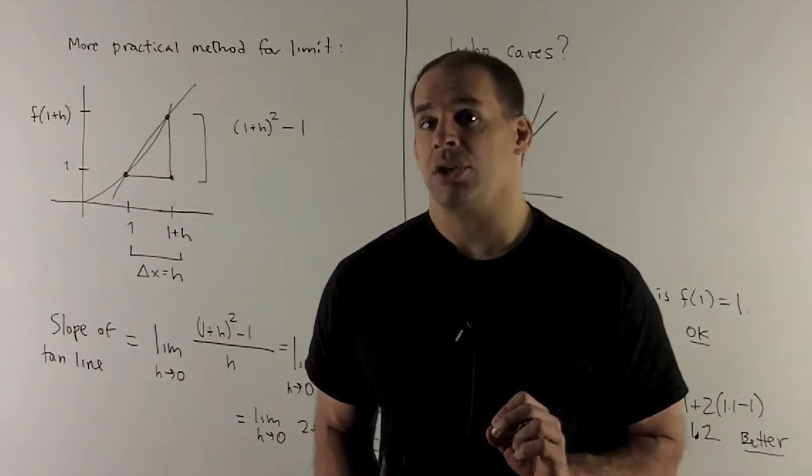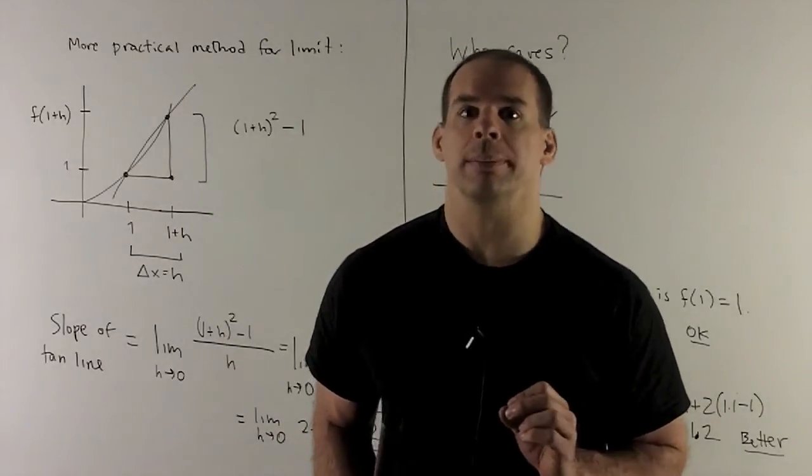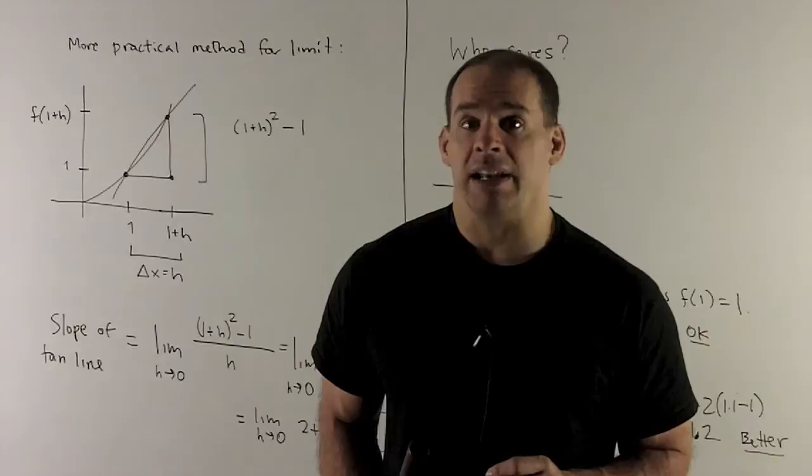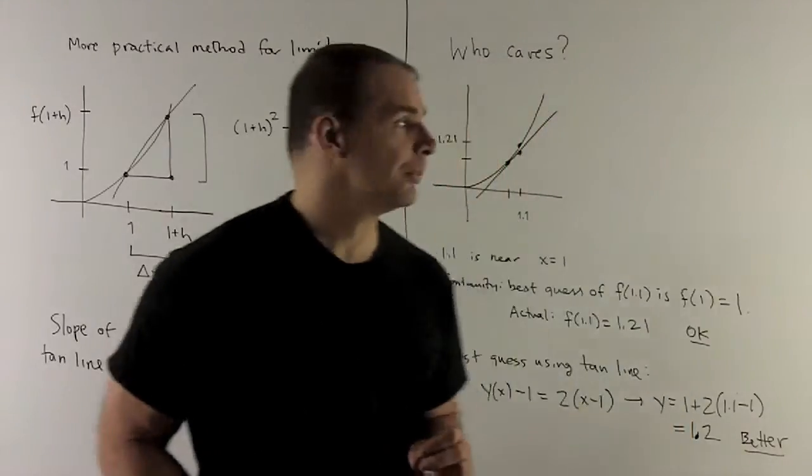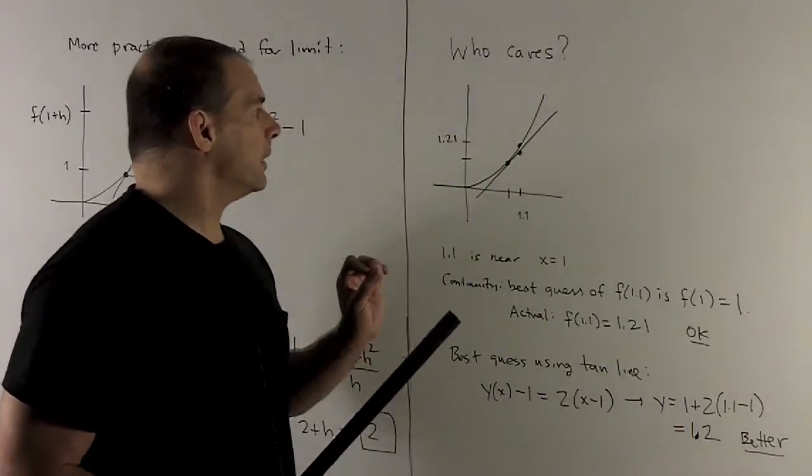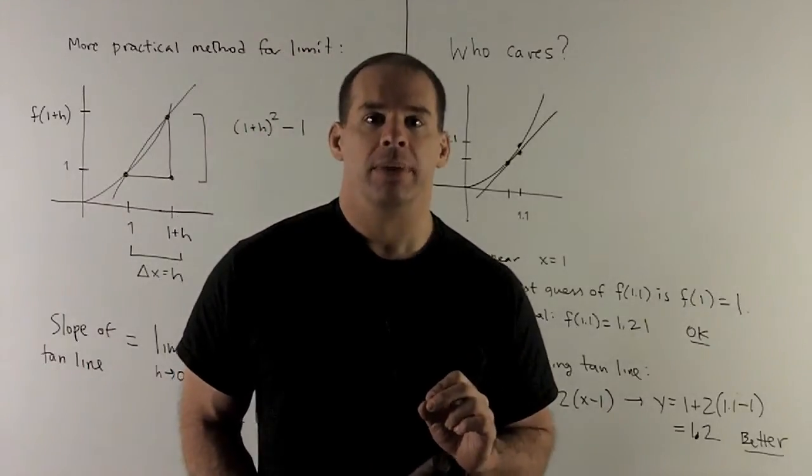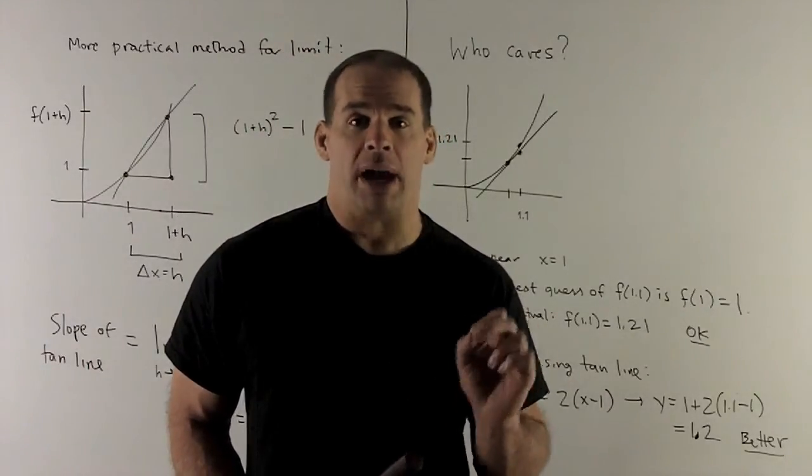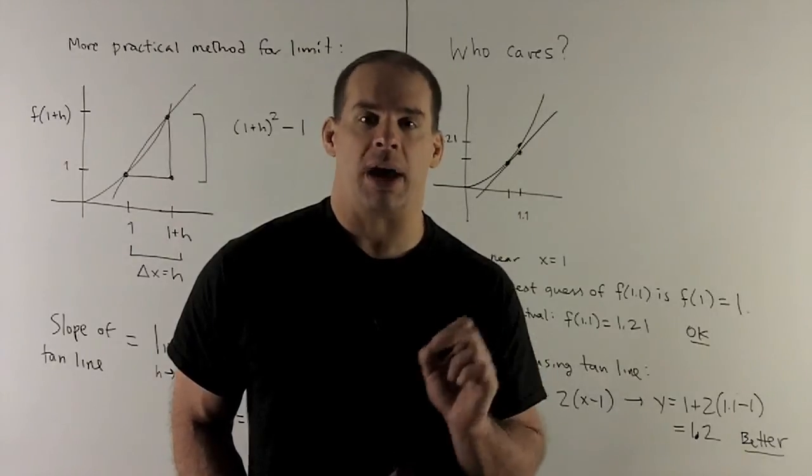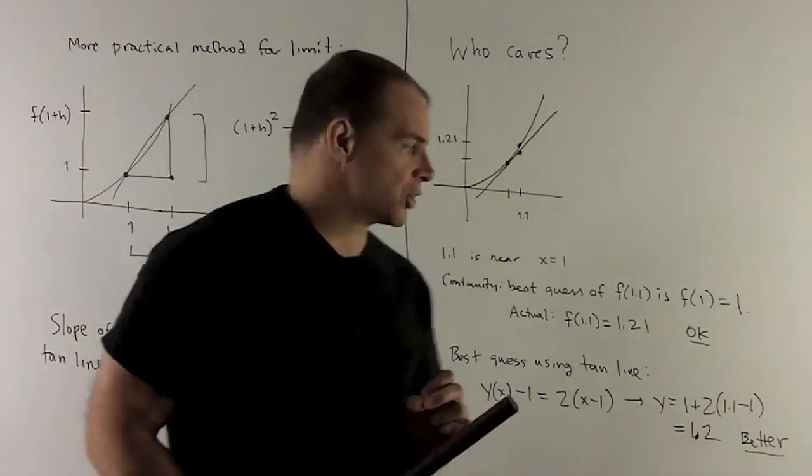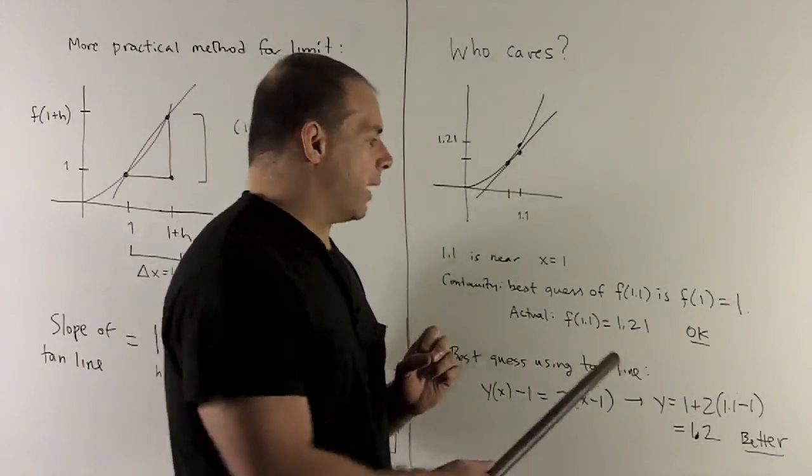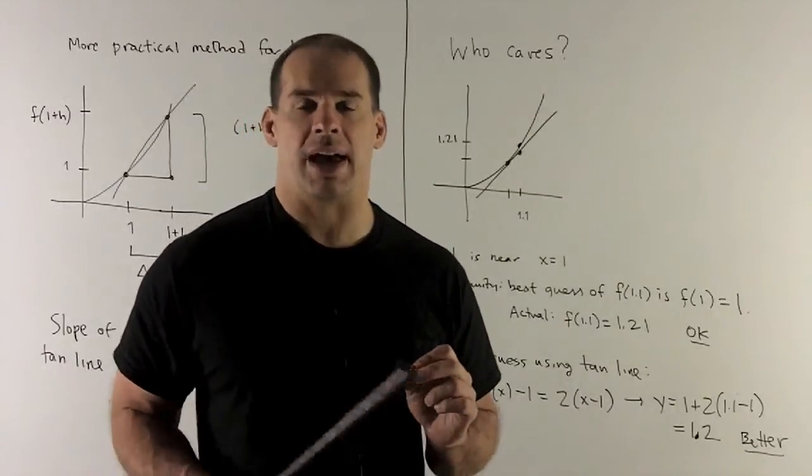That's close, but it's not that great. Let's see how the tangent line gets us a better answer. So what do we have? Well, our equation for the tangent line is going to be, we already did this, y minus 1 equals 2 x minus 1. I push the one to the other side. So I'm looking at y equal to 1 plus 2 x minus 1.